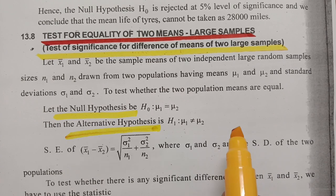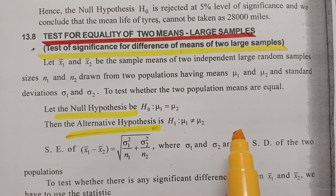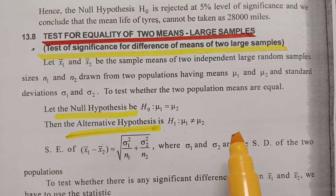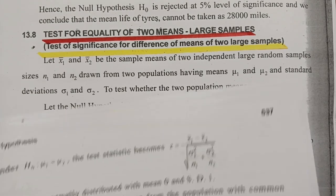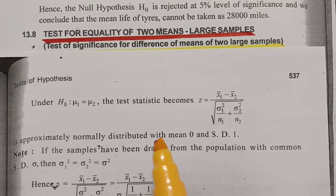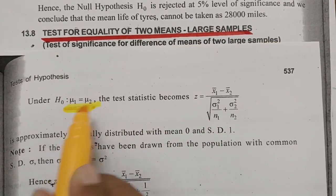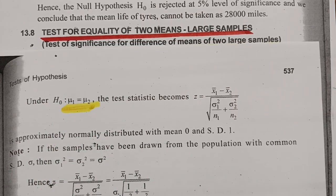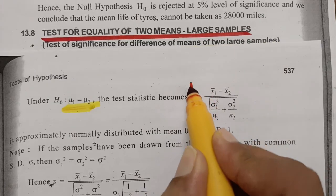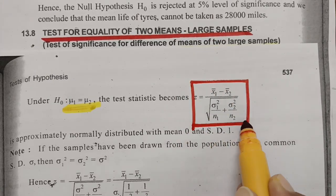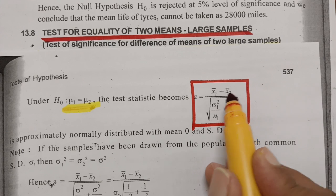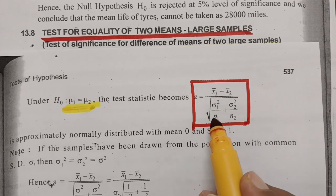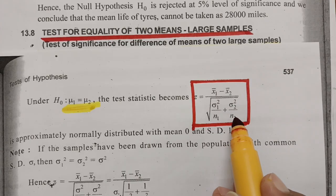The next step is level of significance. It is usually 1%, 10%, or 5%, depending on the problem. If it's not mentioned in the problem, choose 5% level of significance. The next one is test statistics. If μ1 = μ2, the formula is: z = (x̄1 − x̄2) / √(σ1²/n1 + σ2²/n2). This is the most important formula.